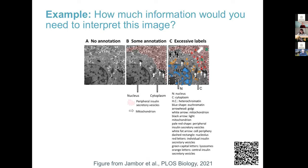Here's an electron microscopy image. Maybe one or two of you might recognize this as an electron microscopy image of a mouse pancreatic beta islet cell. Most of you probably have no idea what this is or how to interpret it. This raises the question of what level of annotation we need to help readers understand the figure. In the first panel with no annotation, the figure is probably not very useful to anyone unless they happen to be an expert in this particular technique.